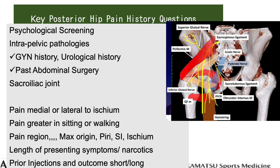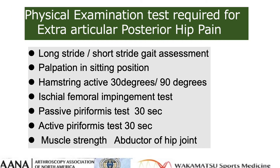Key posterior hip pain history questions include psychological screening, intrapelvic pathologies including gynecological history, prior abnormal surgery, and sacroiliac joint involvement. Consider whether pain is greater with sitting or walking, the pain region, the area of maximum origin including piriformis and SI joint, and the outcome of injections. Fixed examination tests required for extra-articular posterior hip pain include long-stride and short-stride gait assessment, palpation in the sitting position, active hamstring test, ischiofemoral impingement test, passive piriformis stretch test, and active piriformis test.